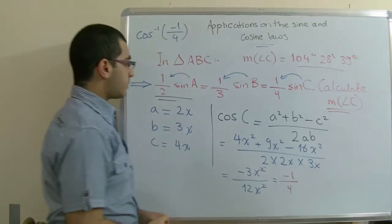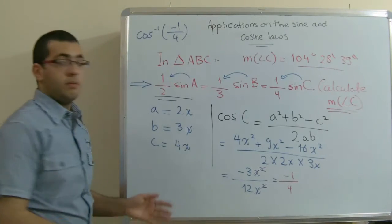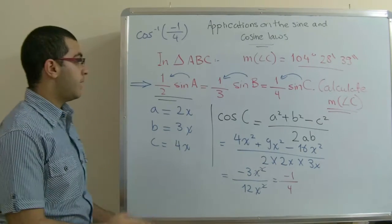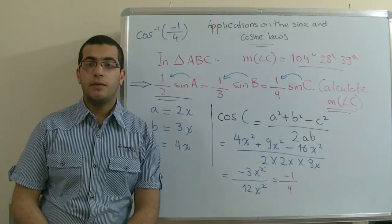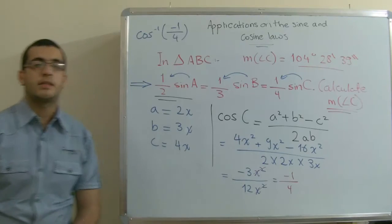And that is how we got measure angle C. We used both the sine law and the cosine law in order to get the measure of this angle. And this is it for today. Thank you for watching and see you next time.